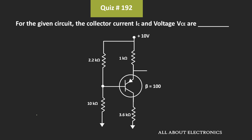So, using this approximate analysis, we got the collector current IC as 1.1 mA, while the voltage VCE is equal to −4.94 V.